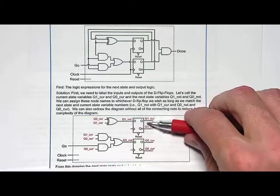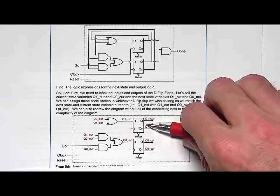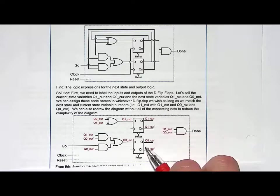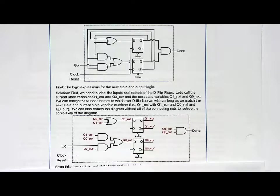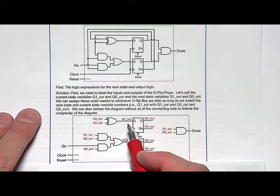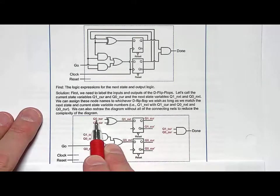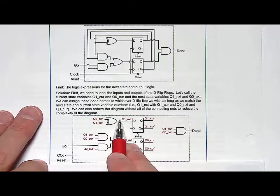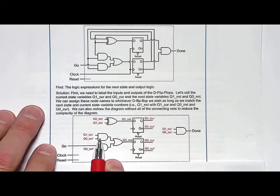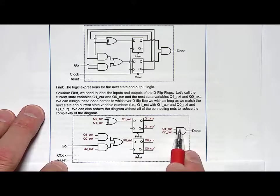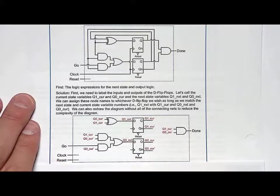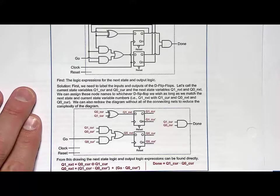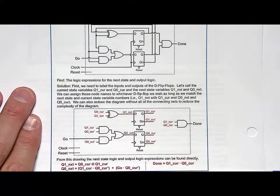Again, arbitrary, I could have called this one q1cur and this q0cur. It doesn't matter. It'll all work out. But I chose this as bit one of the state code, this bit zero of the state code. Now that I have this, q1next and q0next are actually relatively simple. You just look at it and say, that's q0cur exclusive or'd with q1cur. That's the next state logic expression for q1. Then q0next is simply this logic expression with the sum of products. From that we can come up with the logic expressions for all the meaningful information in this sequential logic circuit.